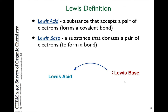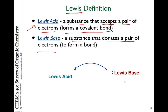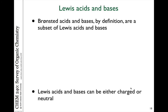There's another definition we need to discuss — the Lewis definition for acids and bases, which is broader than the Arrhenius or Bronsted-Lowry definitions. A Lewis acid is defined as a substance that accepts a pair of electrons and forms a covalent bond — it needs an empty orbital or a positive charge. A Lewis base is a substance that donates a pair of electrons to form a covalent bond, usually something with a lone pair of electrons. A Bronsted-Lowry acid-base pair is a subset of Lewis acids and bases.